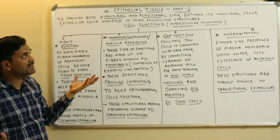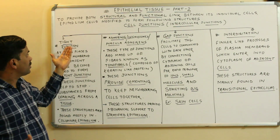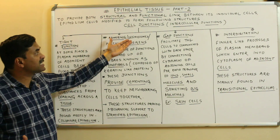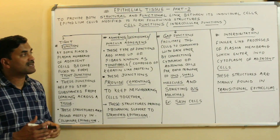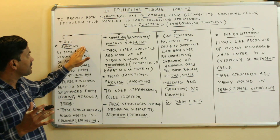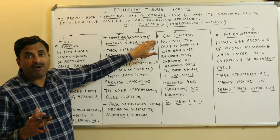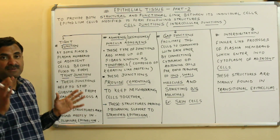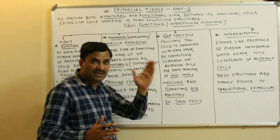Cell junctions or intercellular junctions are basically of four types. One: tight junctions. Two: adhering junctions, also called desmosomes or macula adherens. Three: gap junctions. Four: interdigitation. Out of these four, the three important junctions — tight junctions, adhering junctions, and gap junctions — are also covered in NCERT class 11th.